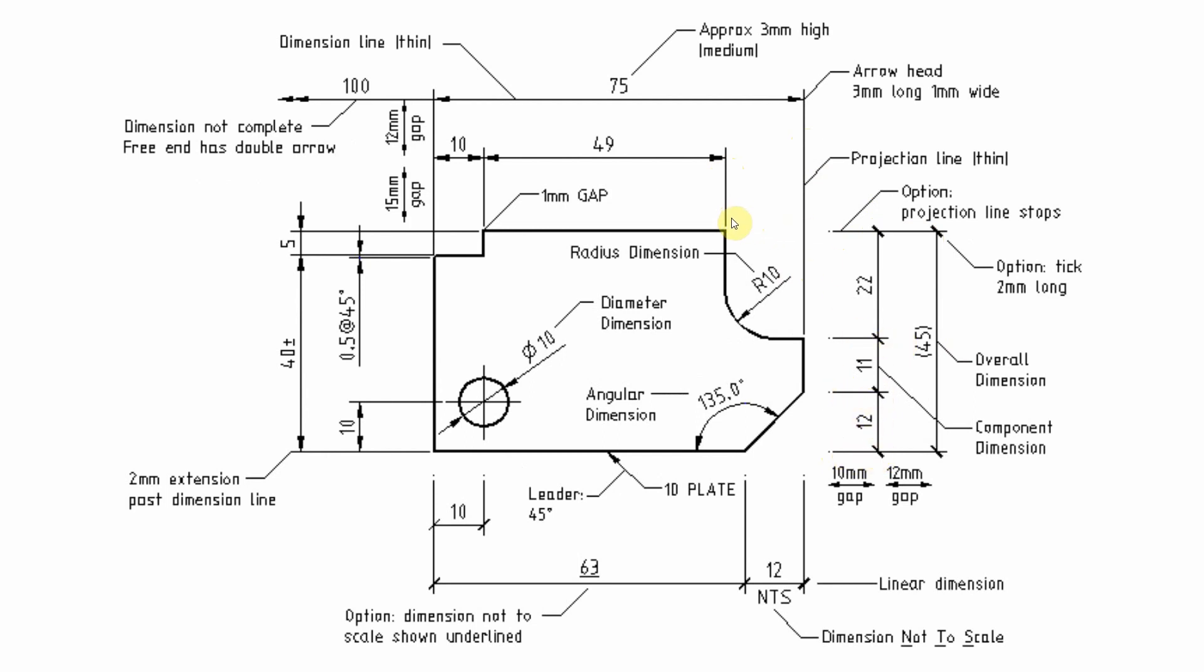Now there's two ways of doing this but first of all we have the option where we have a gap here at the object and that's essential, one millimetre minimum. That's to differentiate between the object and the dimensions. Now the other style is that your projection stops at a fixed dimension like this. So there's two styles here but you must have a gap between the dimension and the object.